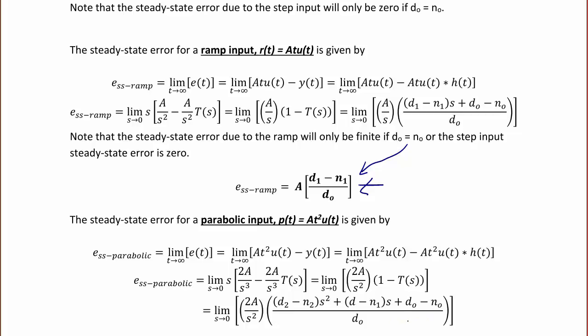Similar to before, note that this parabolic steady-state error will only be finite if d0 equals n0 and d1 equals n1. So in order to have a finite steady-state error for a parabolic input, you have to have a zero steady-state error for the ramp and the step input.